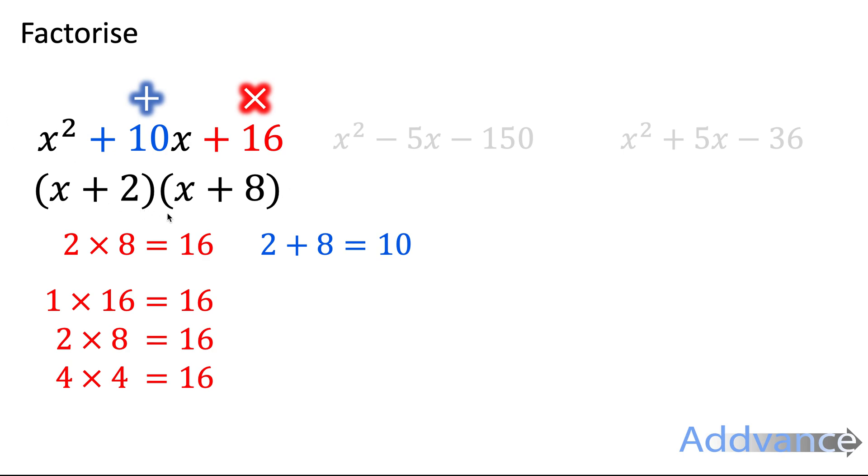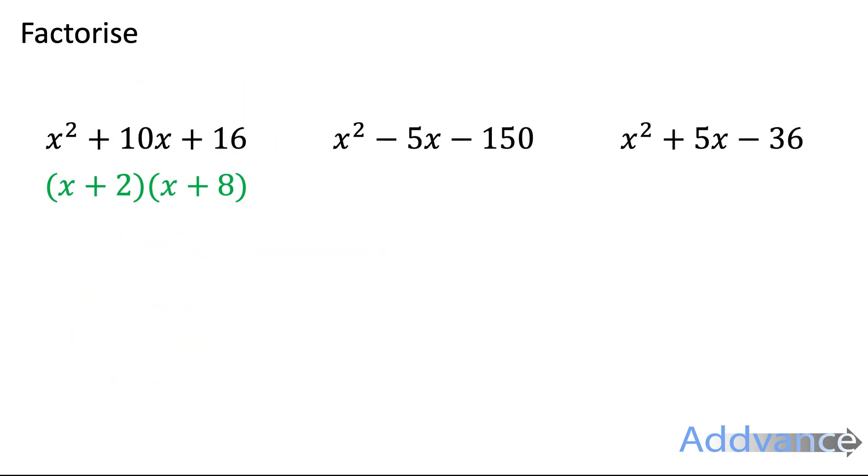It doesn't matter which way round you write the brackets, so it could also be x plus 8 times x plus 2. Okay, we've completed, we've factorised that quadratic. Let's try again, this one, x squared minus 5x minus 150.